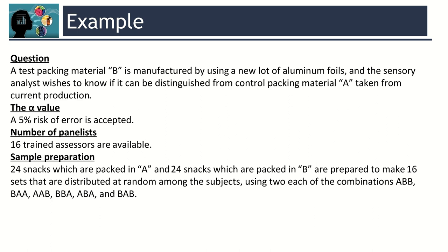Let's clarify the Duo-Trio test through an example. The question is: a test packaging material B is manufactured using a new lot of aluminium foils, and the sensory analyst wishes to know if it can be distinguished from controlled packaging material A taken from current production.